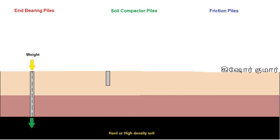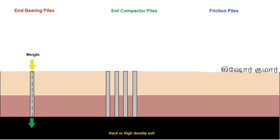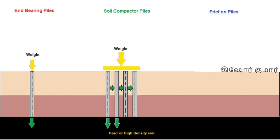End bearing piles is one method of constructing piles. After the pile is done, the columns are erected close to one another or at close proximity till the hard soil. This equally distributes the mass or weight of the structure and improves stability.